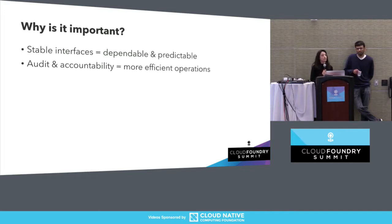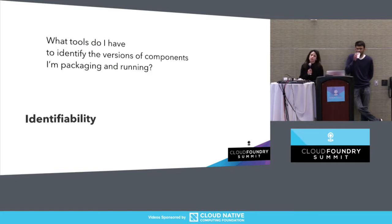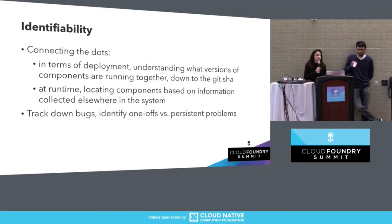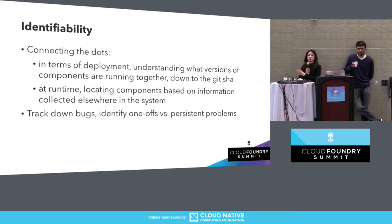The reason consistency is important is that stable interfaces are dependable and predictable — you don't need to worry about them changing. Audit and accountability are really interesting features in a release engineering framework because they allow for more efficient operations. The last question is: what tools do I have available to identify the versions of components that I'm packaging and running? Identifiability is all about connecting the dots at various stages of the software lifecycle.